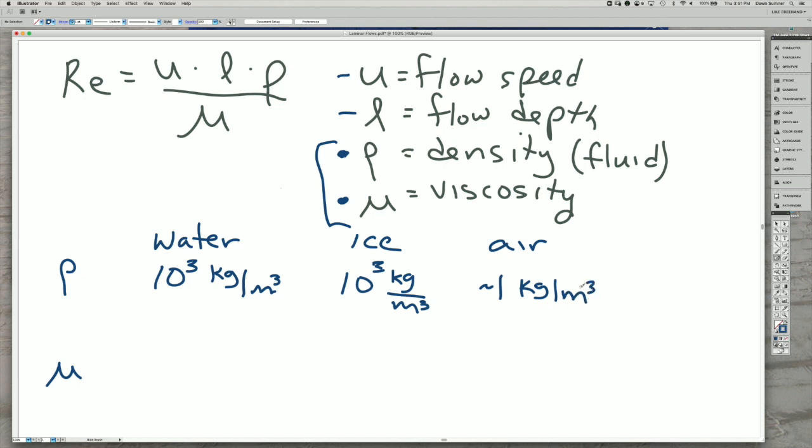It's about, it's a little more than 1 kilogram per meter cubed. But it depends a lot on the density of the air and how much water is in it. So we have air being much less dense. In terms of viscosity, the viscosity of water is about 10 to the minus 3.